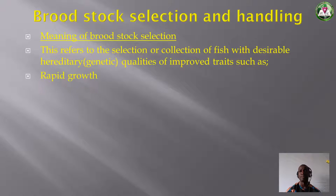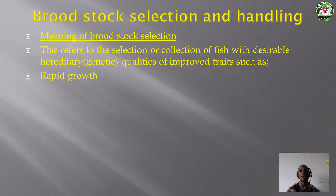One such trait can be rapid growth — the fish is growing very fast. That's a trait you like, so you select it. An example is catfish. Catfish is a very good rapid grower; it grows very fast. Within four months, you can harvest and sell.